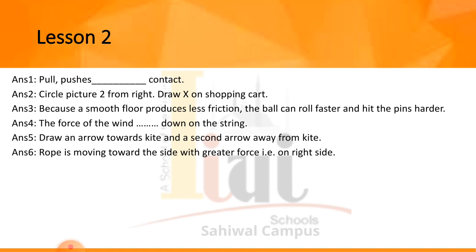Question number 7: read and circle true or false, then correct the false statements. Statement 1 — metal objects without iron are pulled by magnets — this is false, because any metal without iron cannot be pulled by magnets; change 'without iron' to 'with iron.' Statement 2 — the crane uses a magnet to attract plastic objects — this is also false, as magnets attract objects made of iron or containing iron.